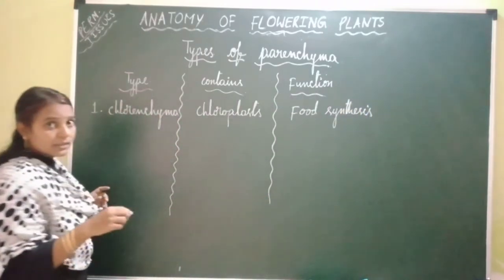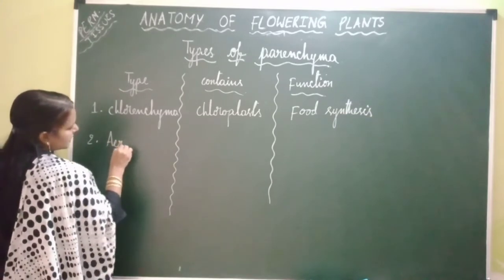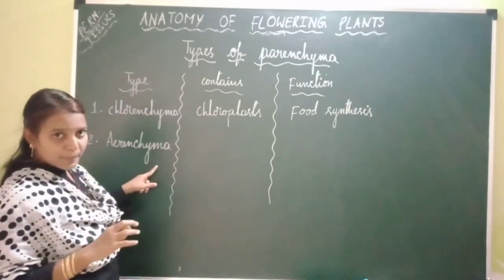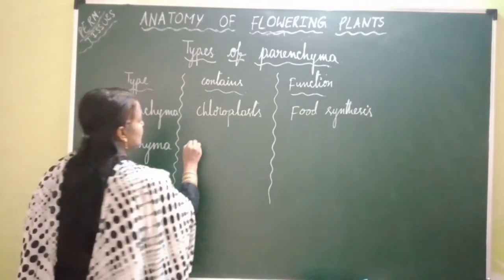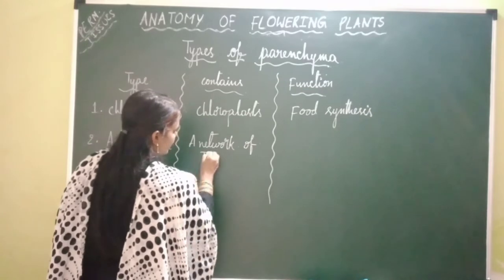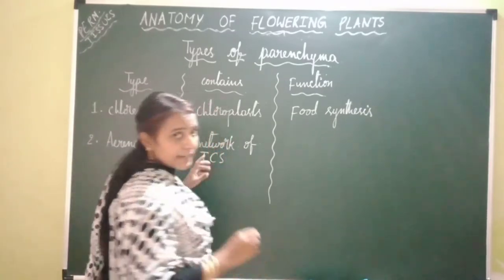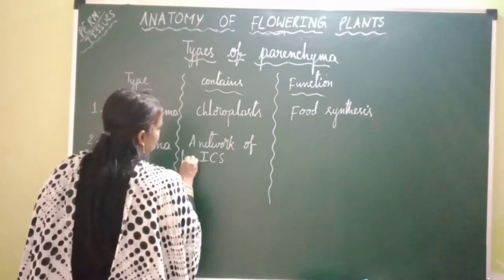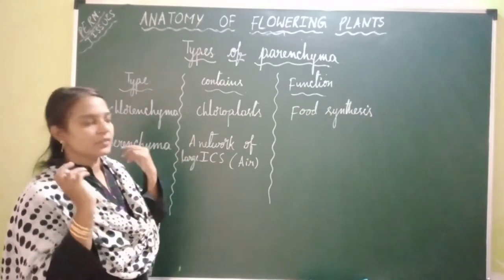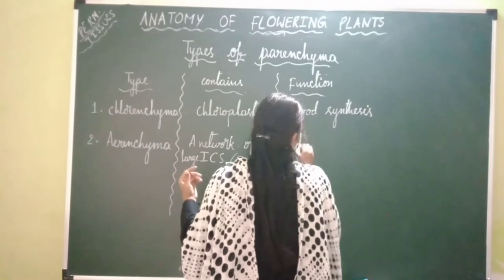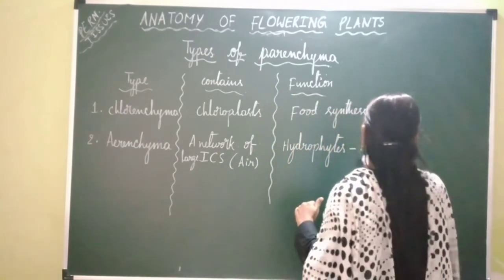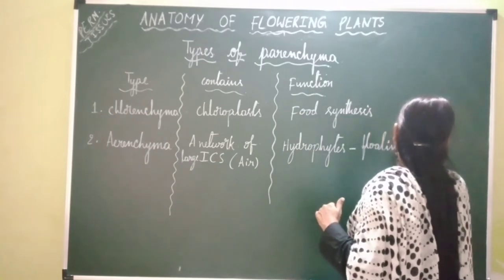The next type of parenchyma is aerenchyma. Aerenchyma is a type of parenchyma which consists of a network of intercellular spaces (ICS). In this network of intercellular spaces, large intercellular spaces are filled with air. Hence, aerenchyma helps in the floating of hydrophytes over the surface of water. That is the primary function of aerenchyma.